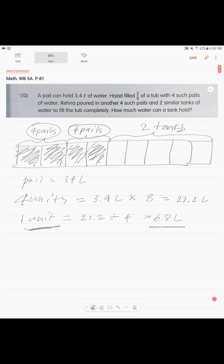Now, they're asking us, how much water can a tank hold? We're calculating this 5 units. 5 units is 6.8 times 5, which is 34 liters.